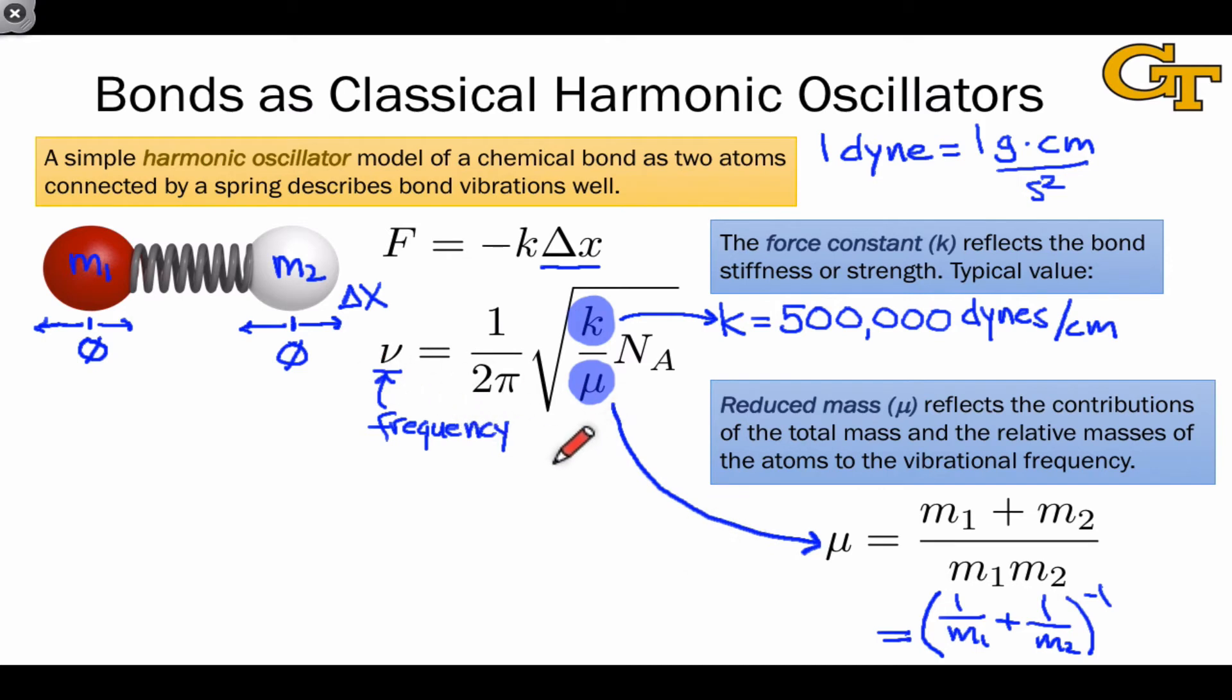What the frequency equation tells us is that the frequency is proportional to the square root of the force constant and inversely proportional to the square root of the reduced mass. N sub a is Avogadro's number, and this appears here so that we can use, for example, atomic mass units from the periodic table and convert them to grams by multiplying by Avogadro's number.